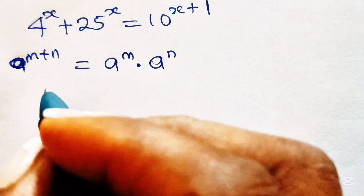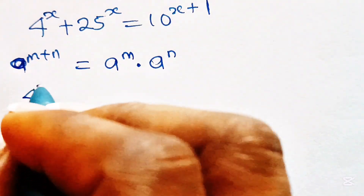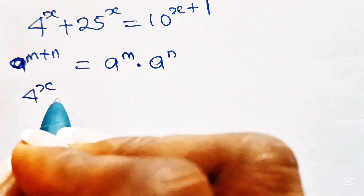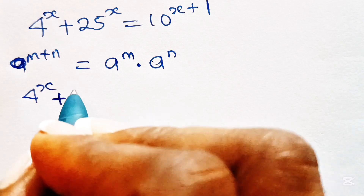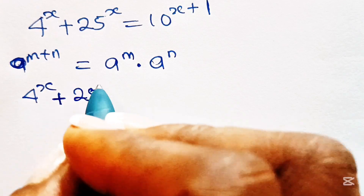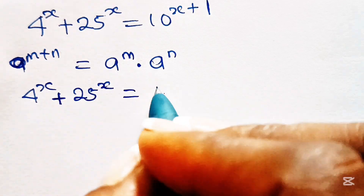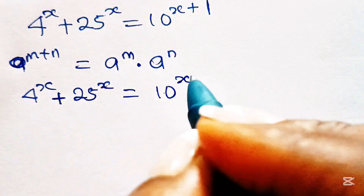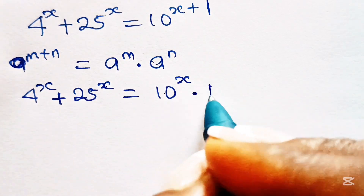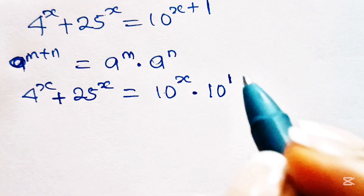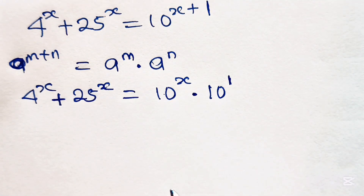So we can now write this as 4 to the power of x plus 25 to the power of x is equal to 10 to the power of x multiplied by 10 to the power of 1.